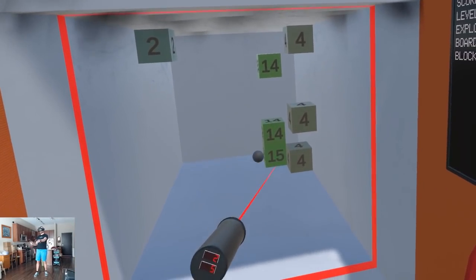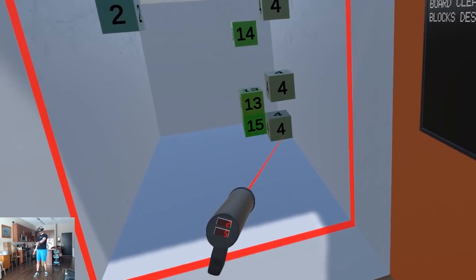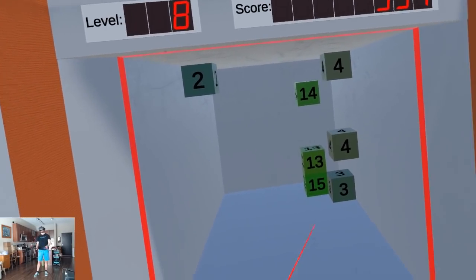All of the cubes are slowly stepping toward you, and you need to eliminate each cube by hitting it with the ball as many times as the cube says.